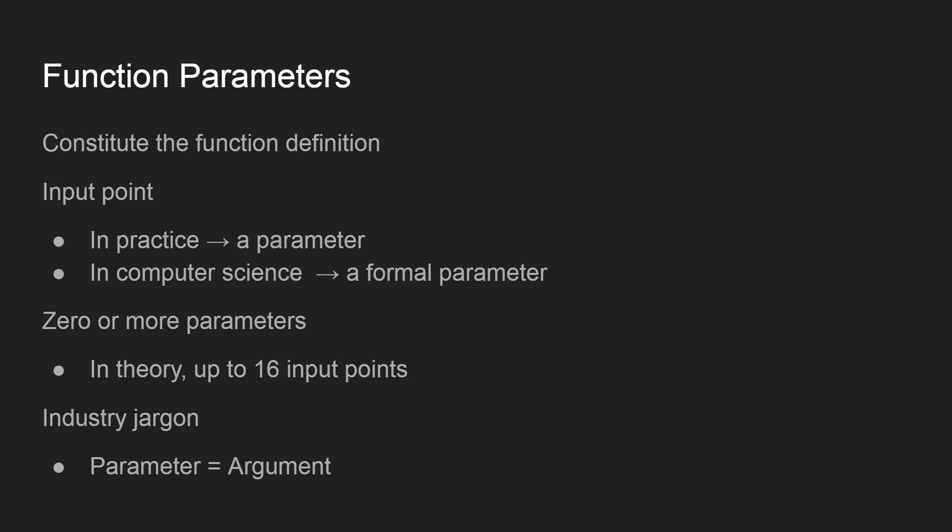Function parameters constitute the function definition — an input point from this perspective is called a parameter. In compiler and programming language design texts, you'll also see the term formal parameter, which in computer science is equivalent to a parameter. A function can have zero or more parameters; in theory up to 16, though in practice this number may be lower — somewhere above 10 or even less.